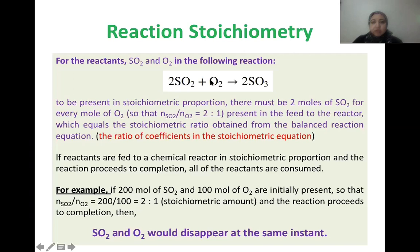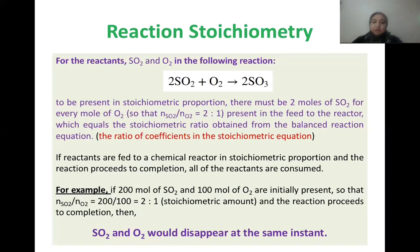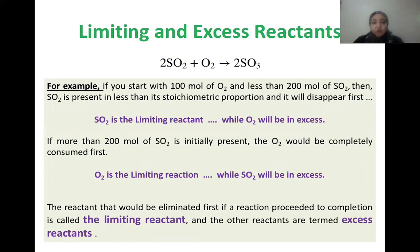When the feed ratio equals the stoichiometric ratio, both reactants will be completely consumed. At the end of the reaction there will be no sulfur dioxide or oxygen remaining — both reactants will disappear, and the product sulfur trioxide will be formed.